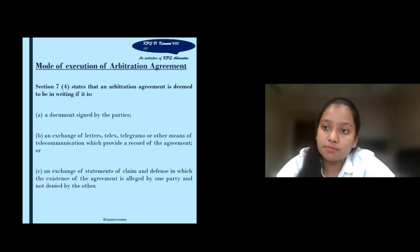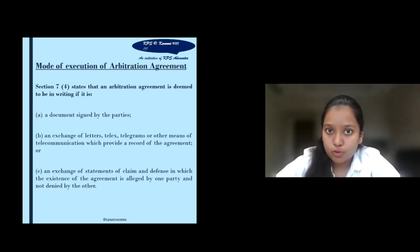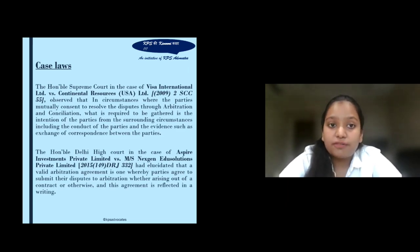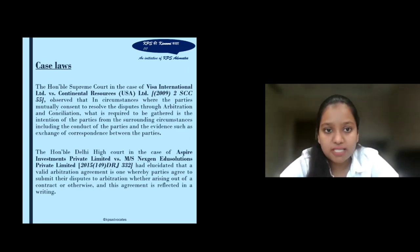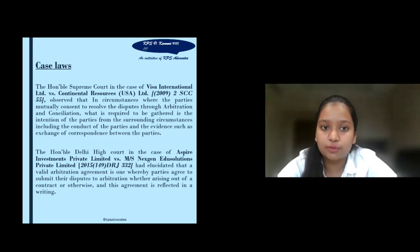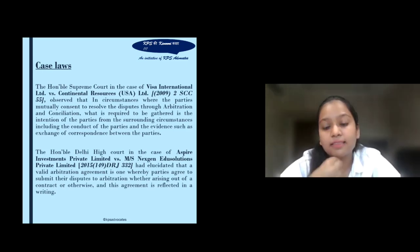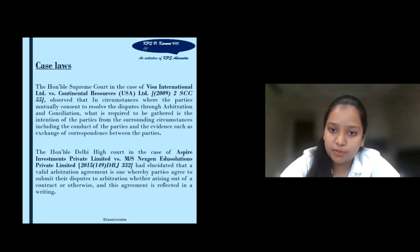Both parties must be on the same page, give consent together, and have the clear intention to enter into the contract. When we talk about case laws, the first case is Visa International Limited versus Continental Resources Limited. In this case, the Honourable Supreme Court observed that where parties mutually consent to resolve the dispute through arbitration and conciliation, the most important aspect required is the intention of the parties and evidence that both parties have come to the intention and consent that they want to solve their dispute through the arbitration process.